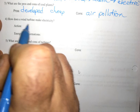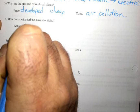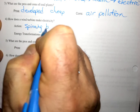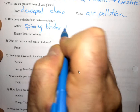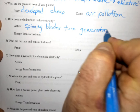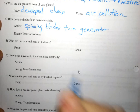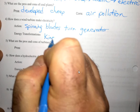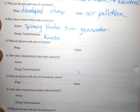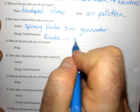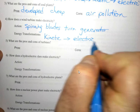How does a wind turbine make electricity? The action is the spinning blades turn a generator. So there's not many transformations here at all. We just have the kinetic energy of the wind turning to kinetic energy of the blades, the kinetic energy of the magnets spinning in the generator, which turns into the electric energy of the electrons.